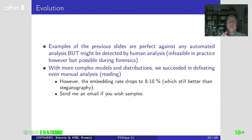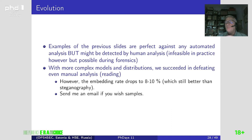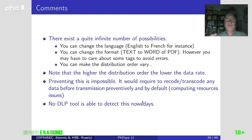With more complex models and distributions we have managed to defeat even manual analysis. It means that even if an analyst takes the time to read every document, they will not be able to guess that one document over another contains something special. At the present time, it is impossible to prevent this, no DLP tool is able to detect this nowadays, and I don't think they ever will.